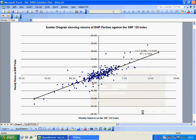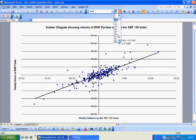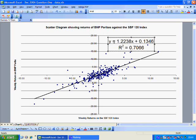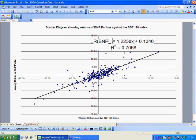In fact, if I just change the font of it so it's a little bit more visible, so here we have it. This tells us that the returns on BNP are equal to some constant, 0.1346, referred to as the alpha, plus 1.2238 times by the return on the index, which is the SBF 120.